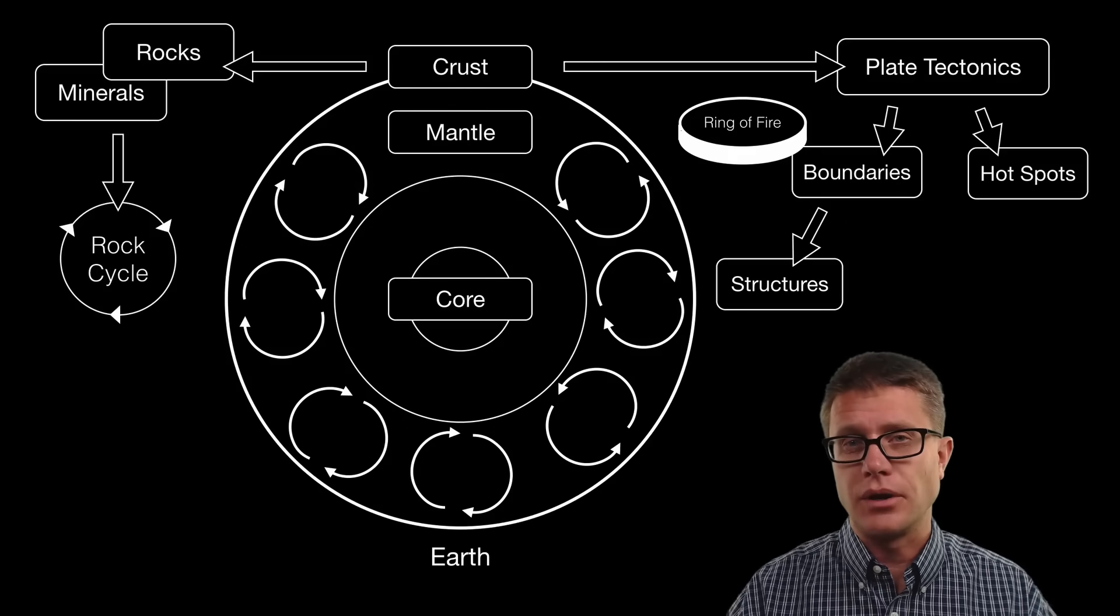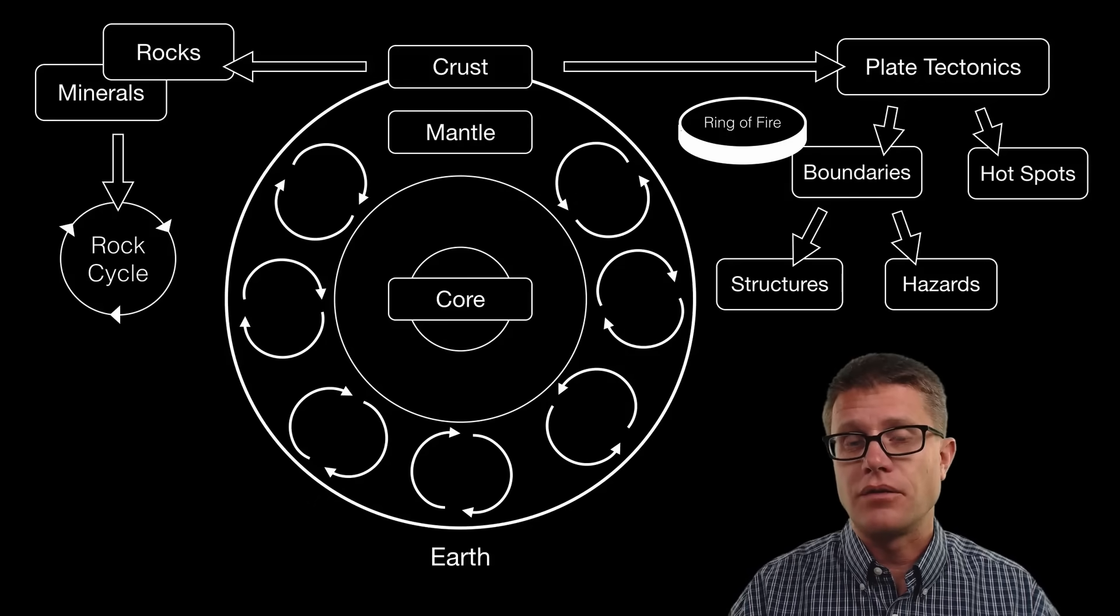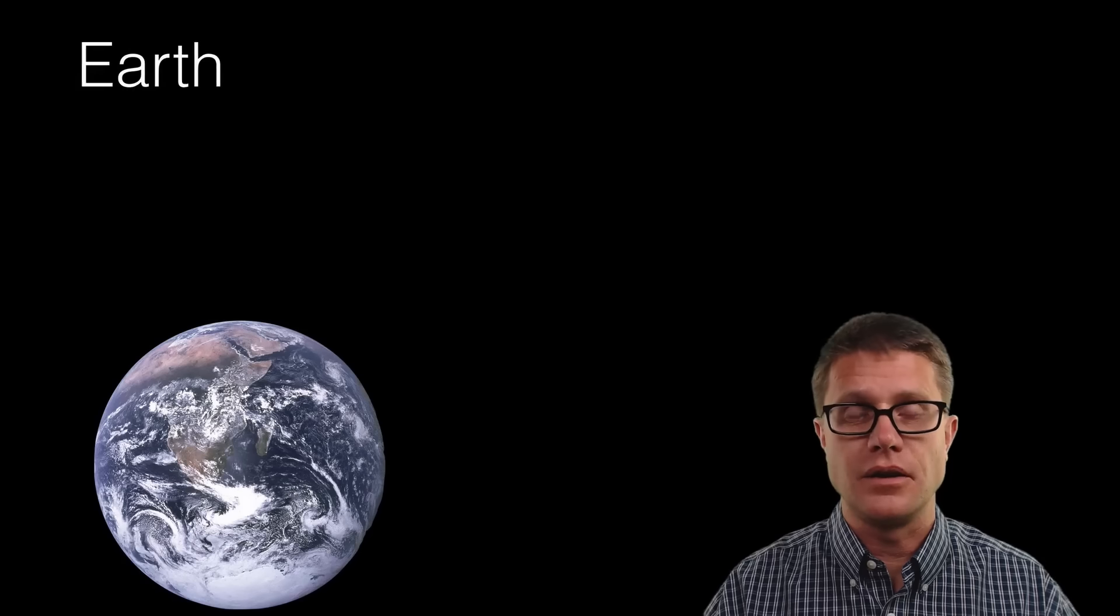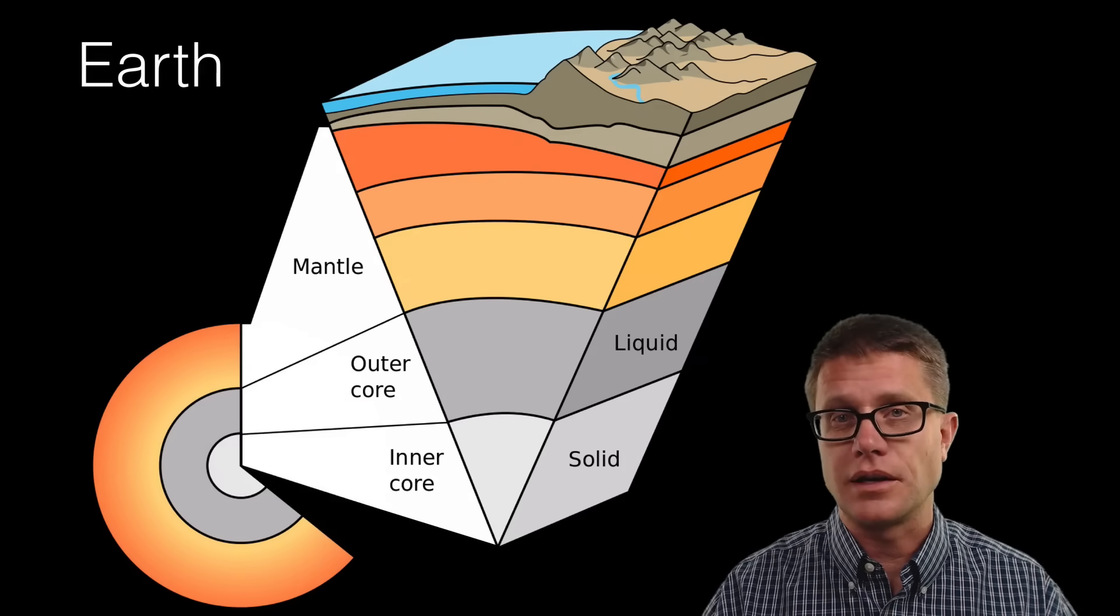Now if we look at where those boundaries occur we will have structures, like volcanoes and mountain chains. But we also therefore have hazards around those areas, where it can impact human society. And we will discuss a lot of those. And so to understand what is going on in the earth we should really understand what it looks like on the inside.